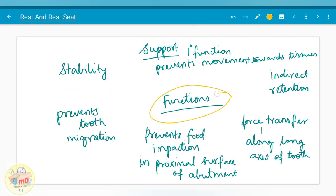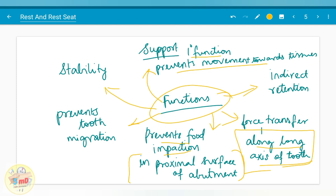What are the functions of rest? It provides support. It is its primary function as it prevents movement towards the tissues. It also helps in indirect retention, provides stability, prevents tooth migration and food impaction near the abutment teeth, and helps in force transfer along the long axis of the tooth. This is important to prevent dislodgement of the prosthesis while distributing the force.